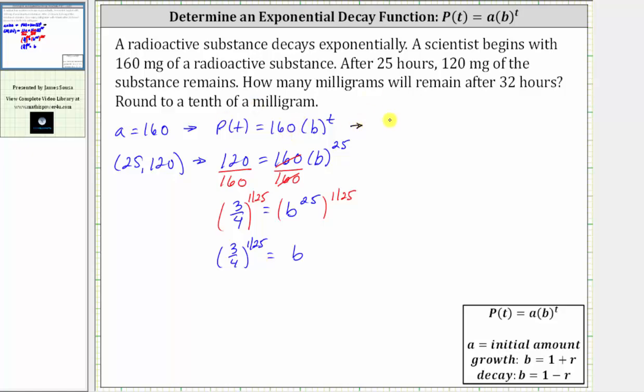So now we'll substitute b back into our function P(t), which will give us P(t) equals 160. Now because the base b has a rational exponent, let's put the base b in brackets. So we have open bracket, and then 3 fourths raised to the power of 1 over 25. And this base b is still raised to the power of t.